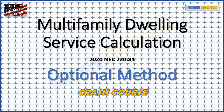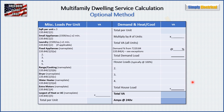This is on the 2020 code, but it's also going to be good for several code cycles going backward because they don't change article 220 very much. Just to be sure, check with your code cycle and make sure there aren't any changes you need to be aware of. I've developed this table here to give you all your information in one shot so you have the whole calculation on one page and don't have to go flipping back and forth. I'll go over this quickly to show you how it's broken down and then we'll get into some examples.